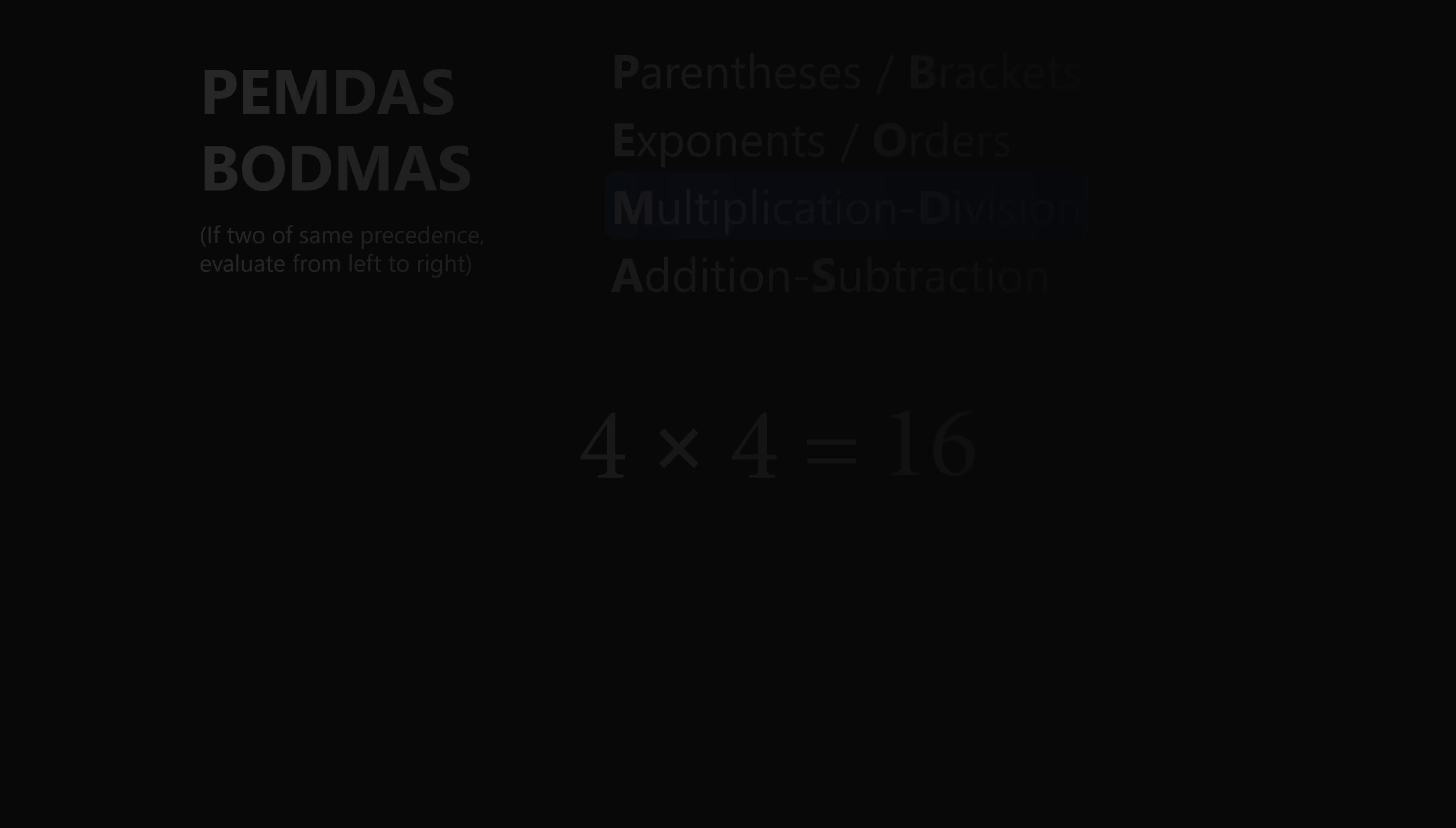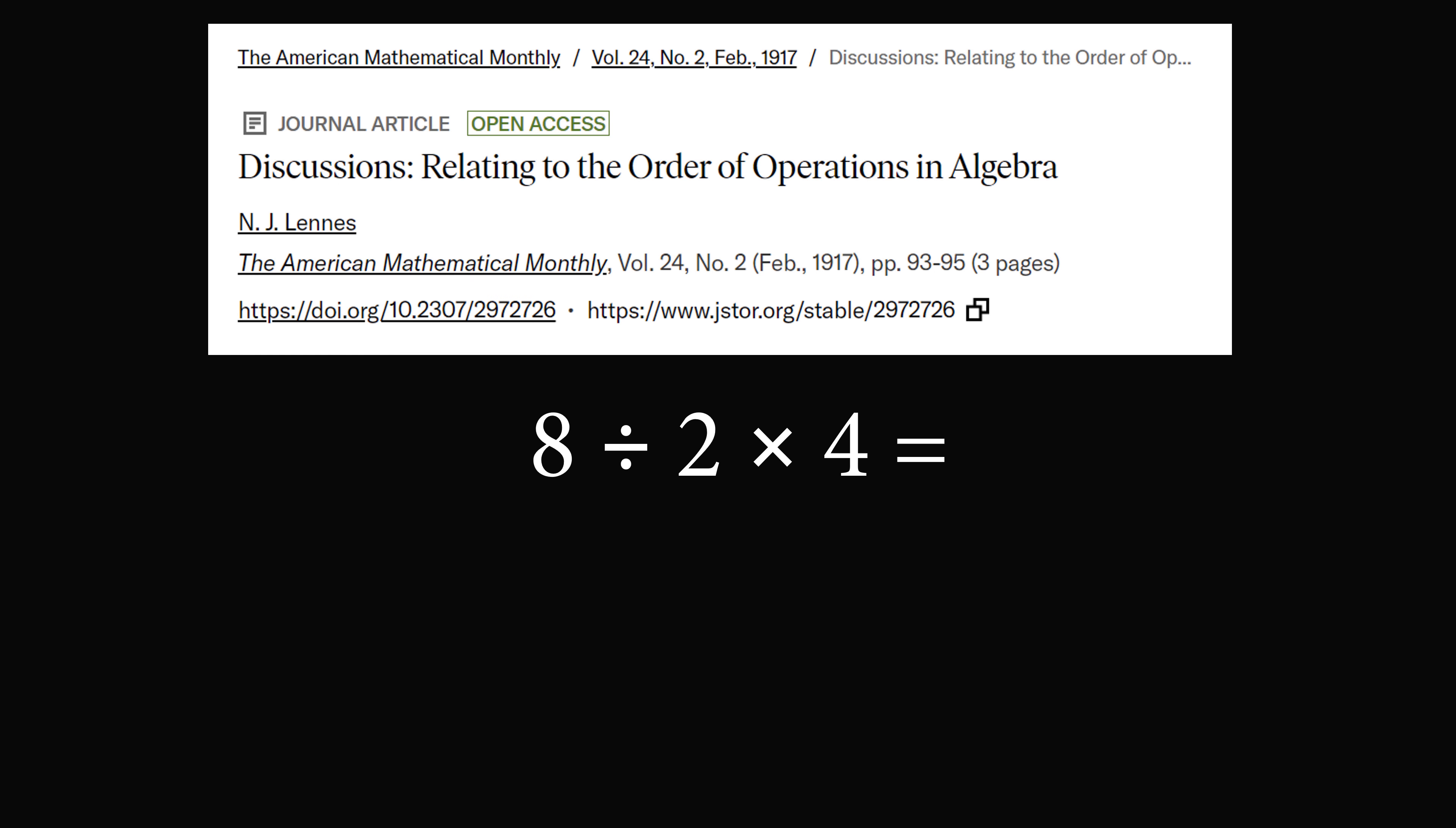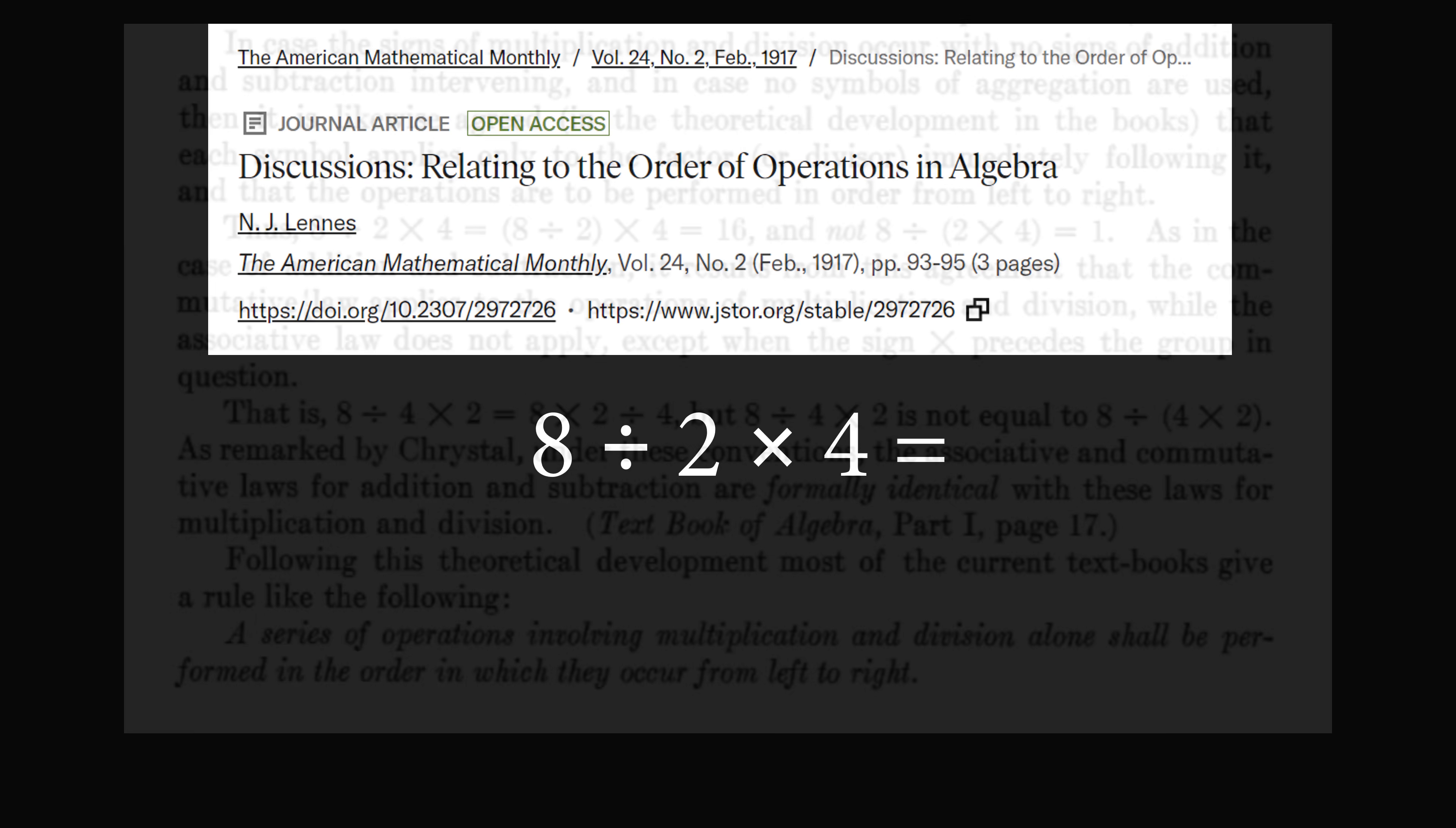Now let's just go back in time a little bit to the year 1917. I came across this paper, Discussions Relating to the Order of Operations in Algebra, and this was published in the American Mathematical Monthly, which was first published in 1894. It's quite amazing that something could still be published that was started in 1894. Interestingly, they covered exactly this topic.